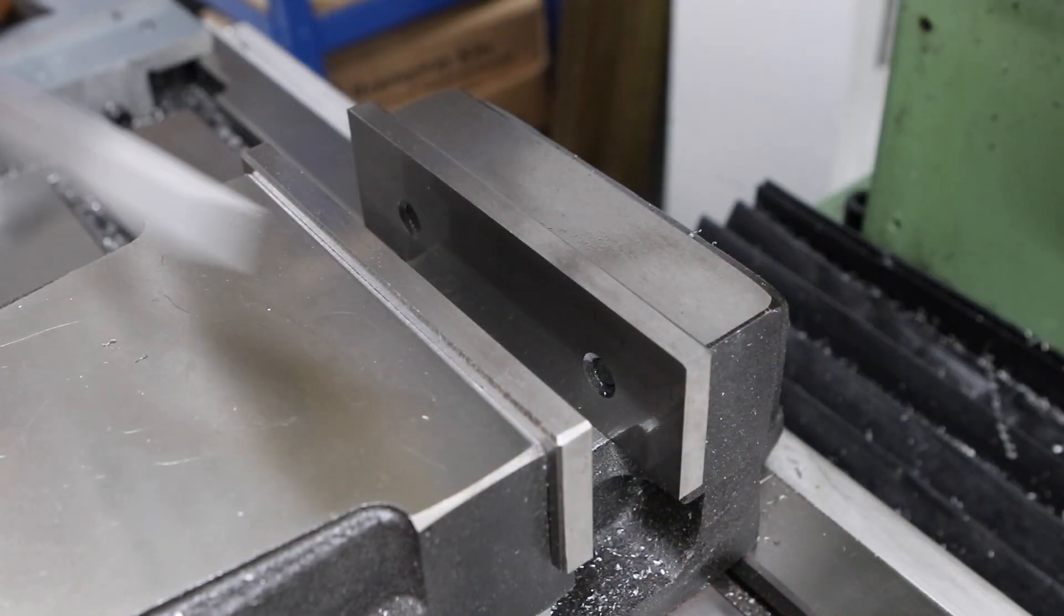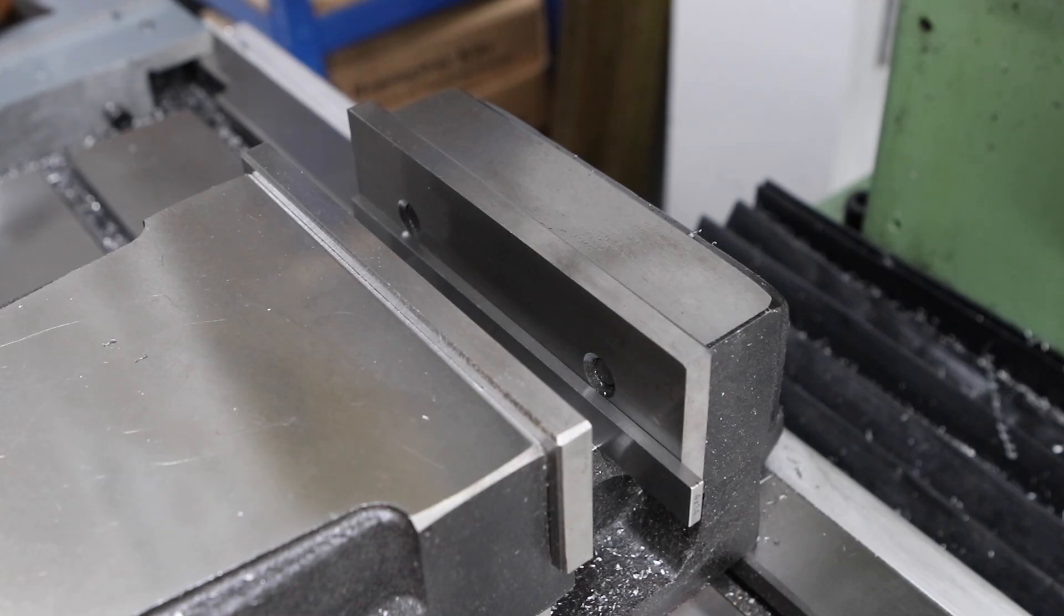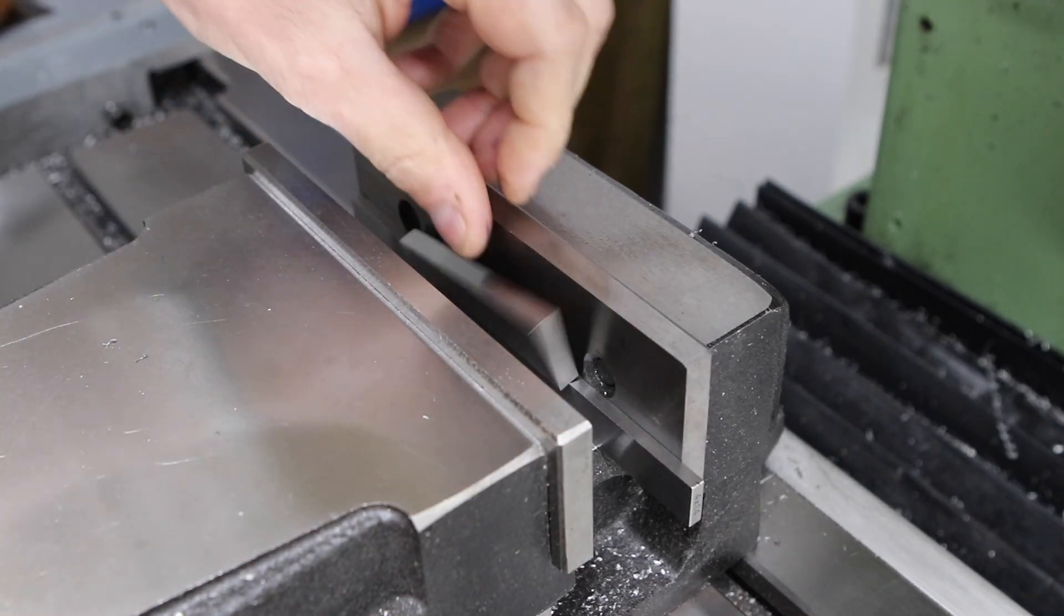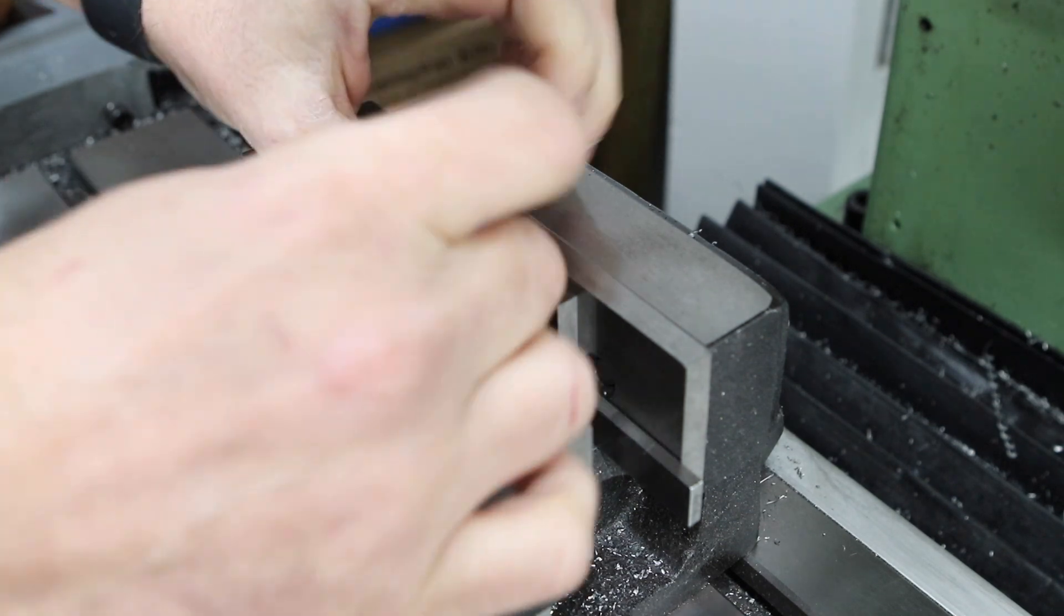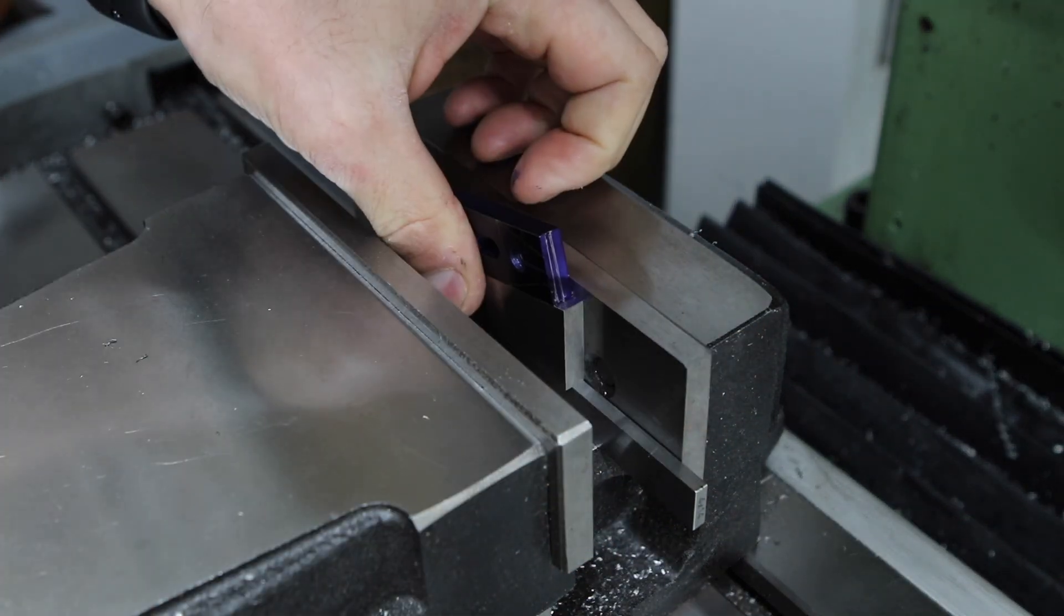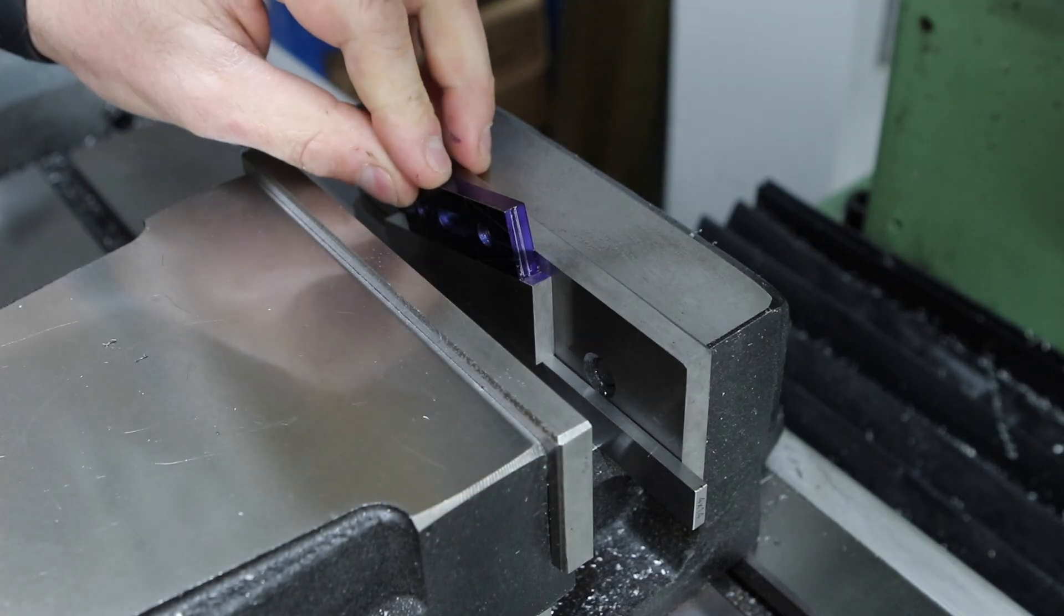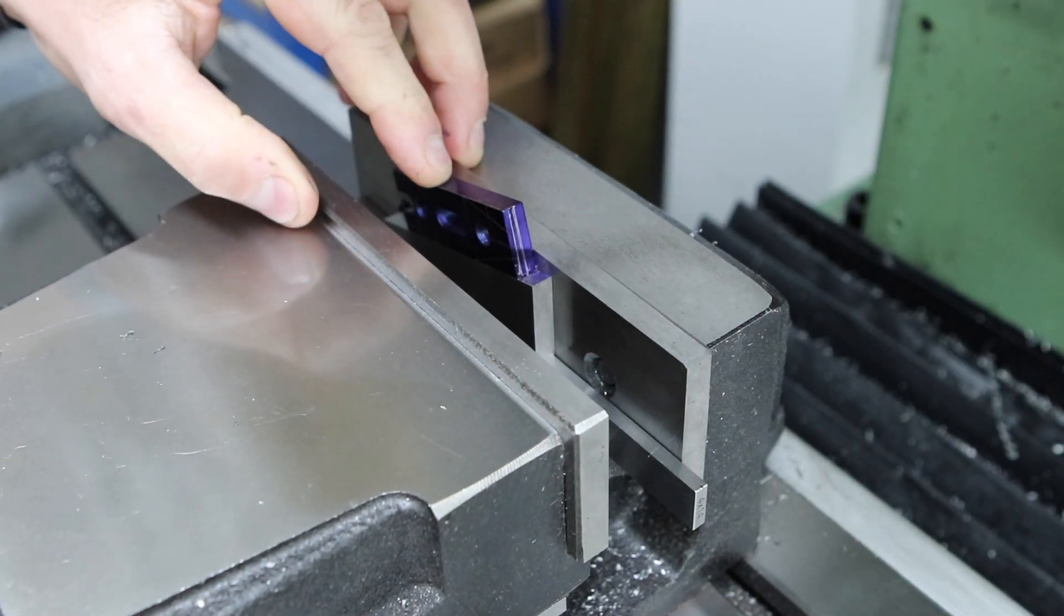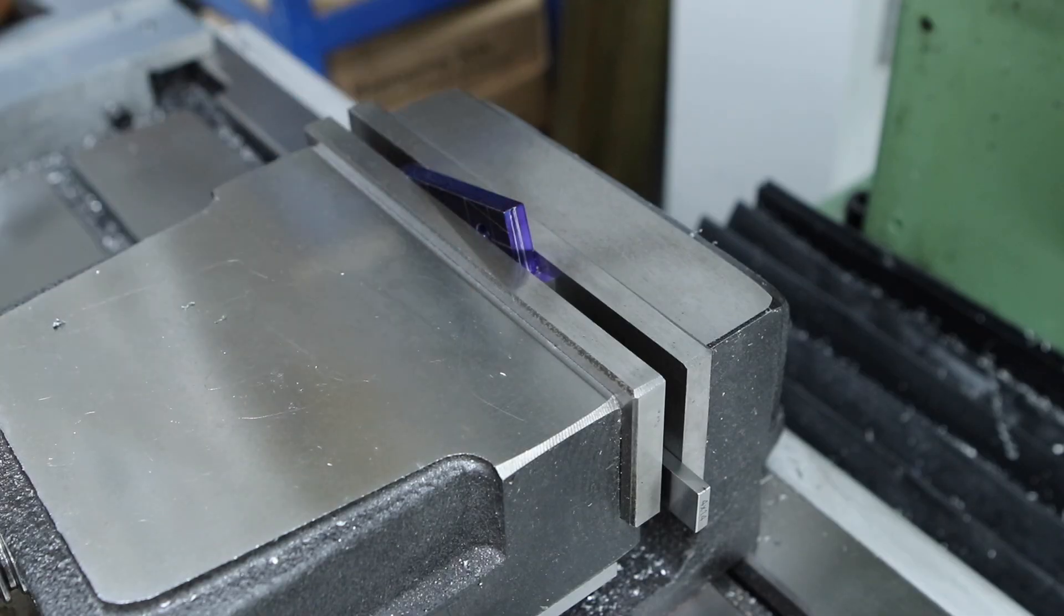You can also add them together so you could use a two and a five for instance to get a seven degrees which I'll be using on the next cut. But I'm just setting up for the 15 degree angle here and I'm using the parallel in the back of the vice, the angle block on the top of the parallel and the workpiece on top of that and then I just pinch the vice closed and that should give us a nice parallel cut across the top of the workpiece.